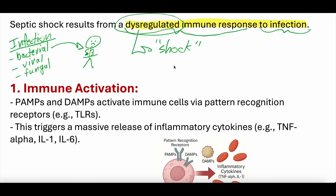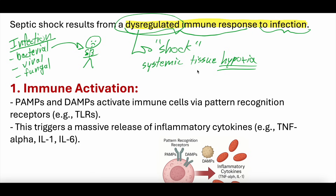Shock, at its simplest level, is systemic tissue hypoxia — the tissues are not getting enough oxygen delivered to them. That does not necessarily mean oxygen levels are low; that would be hypoxemia. Hypoxia means there's not enough oxygen being delivered to the tissues compared to how much those tissues are demanding. That causes shock and tissue injury. So sepsis is infection; shock is systemic tissue hypoxia — you have an infection that causes a dysregulated immune response that can lead to shock.